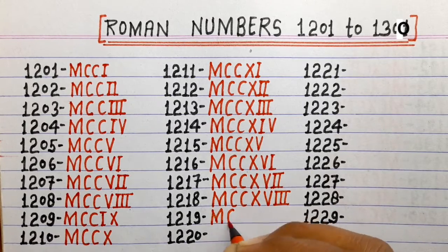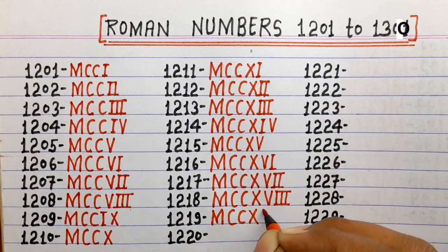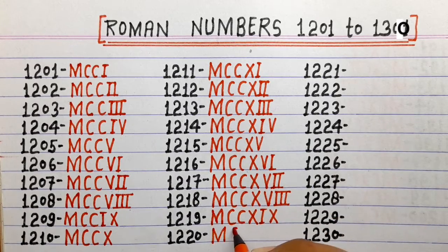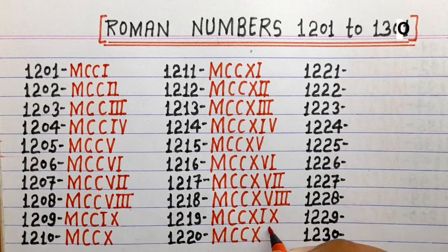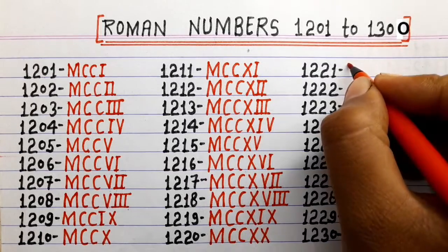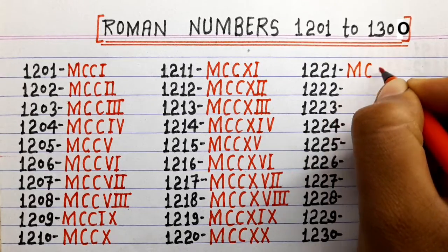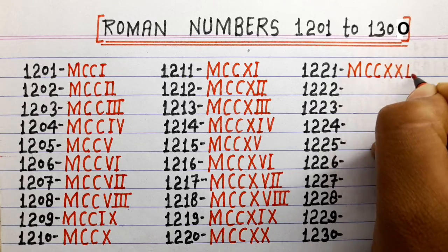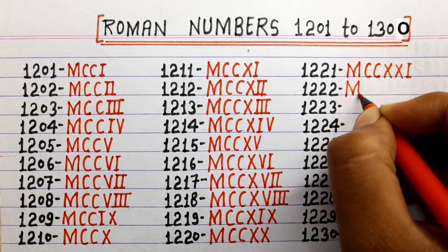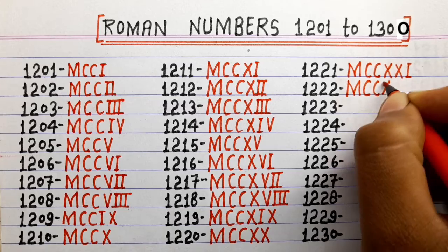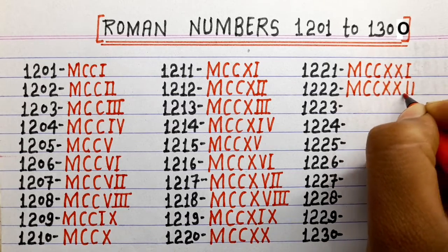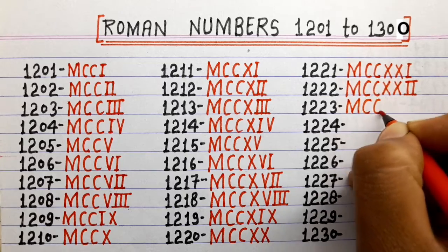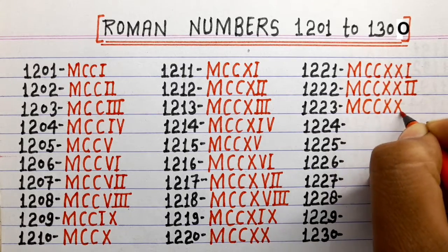1219 MCCXIX, 1220 MCCXX, 1221 MCCXXI, 1222 MCCXXII, 1223 MCCXXIII.